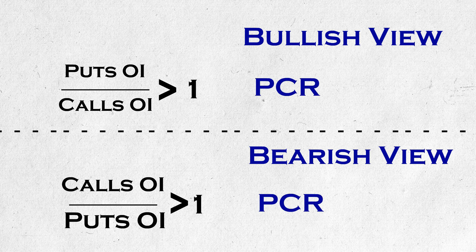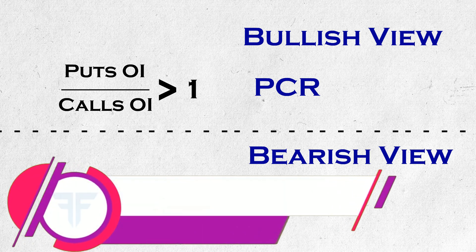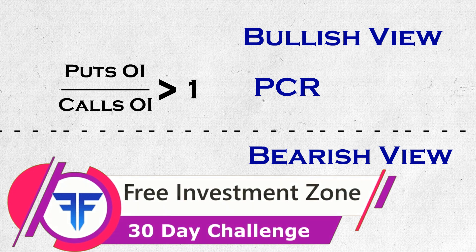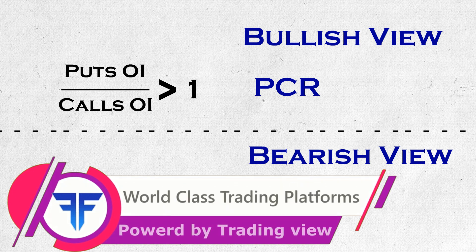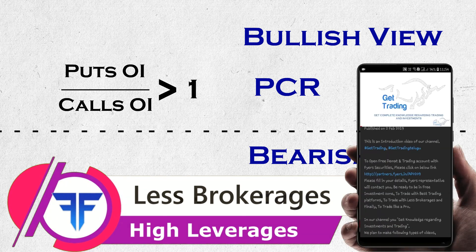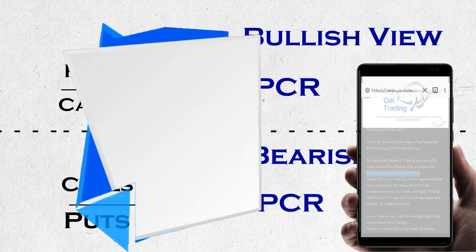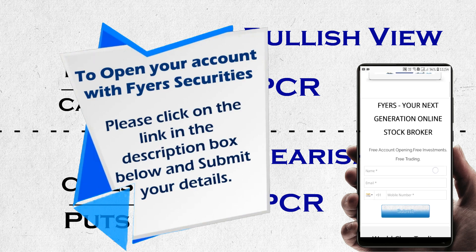In an uptrend, if the PCR value reaches 1.5, there is some chance that sentiment may change and markets may fall. Similarly, if PCR value reaches 0.6 or sometimes 0.5 in a downtrend, there are chances that sentiment may change and the script may go into uptrend. Just keep these into consideration and add them to your confluences list. If at any time I find this is working, I will make a special video on it. If any of you feel this is working, please write to us in the comment section below.